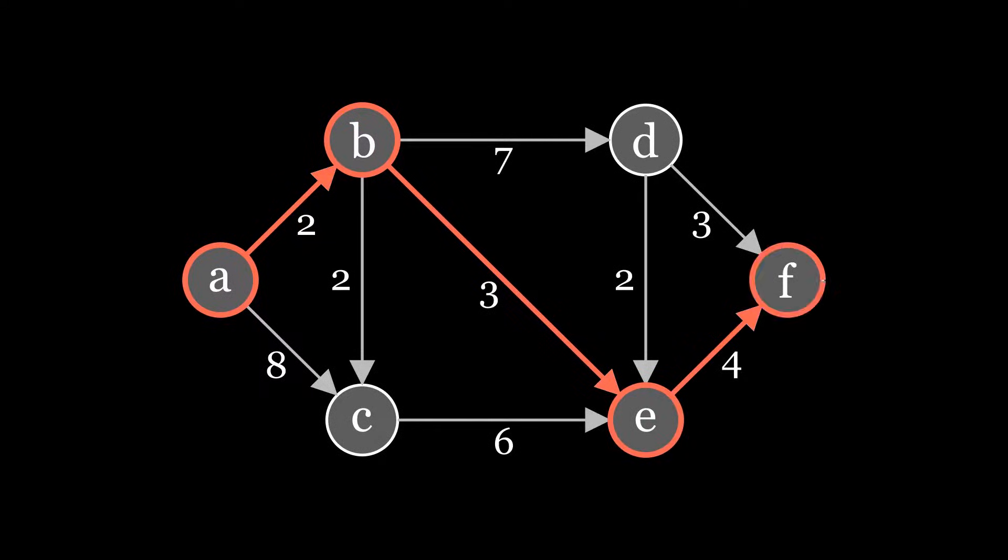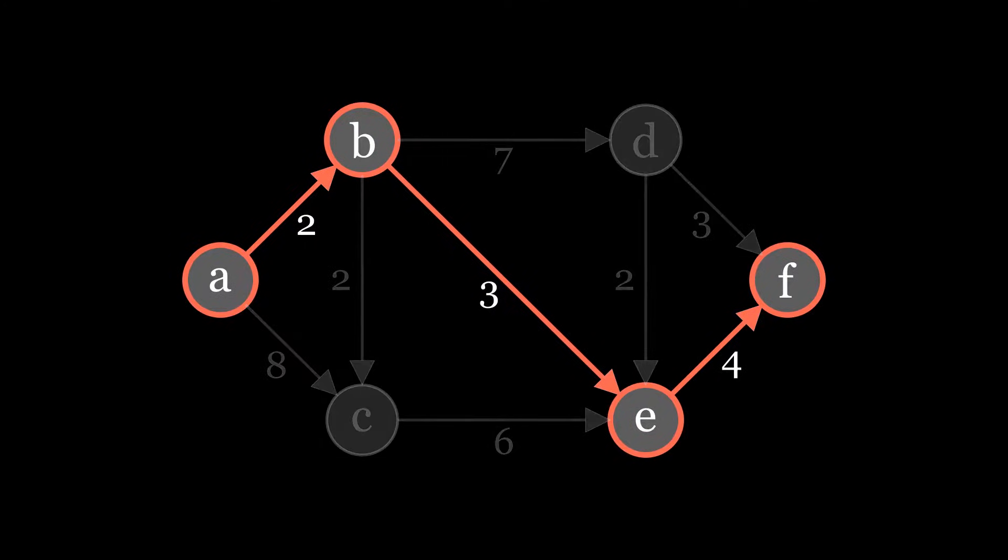Let's now choose a path from the source to the sink. We can see that the edge from A to B has the lowest capacity, which means that 2 is the bottleneck for the flow along this path.